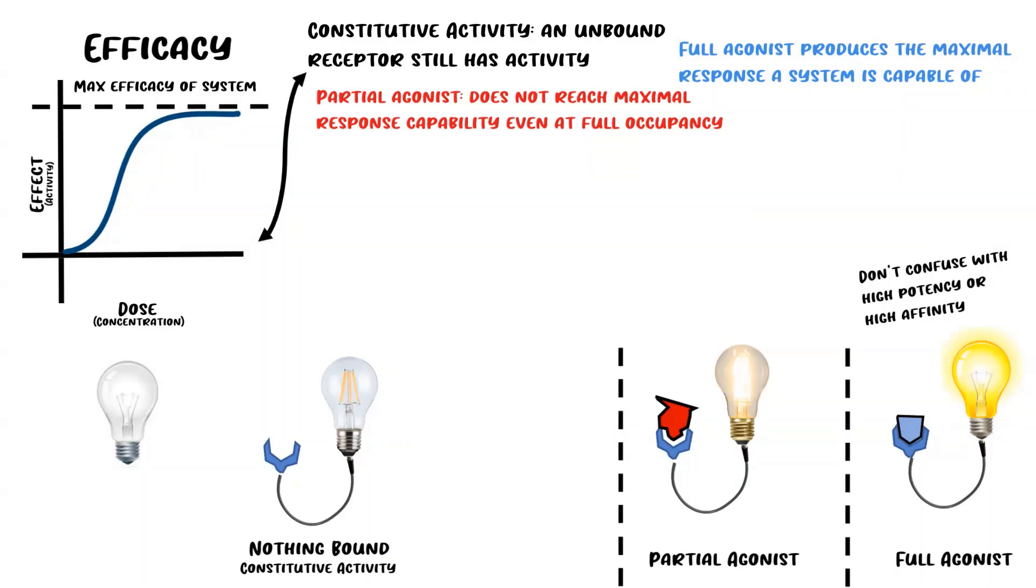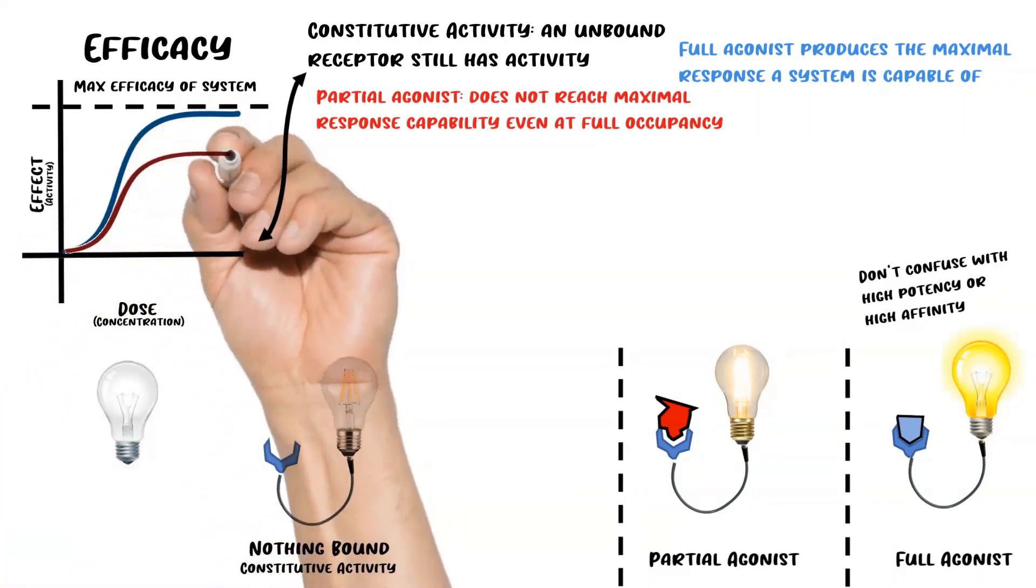As we were saying before, when a drug binds, the receptor makes a conformational change—it changes shape. The partial agonist might change it to a shape that is able to produce an effect, but it's not quite as effective as the full agonist because it doesn't change the shape fully. I just want to point out that a partial agonist acts as an antagonist in the presence of a full agonist.